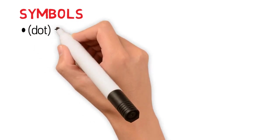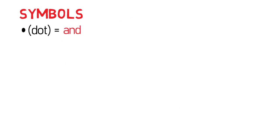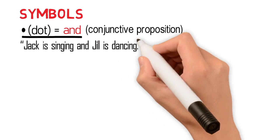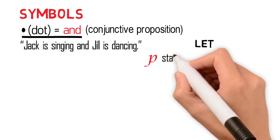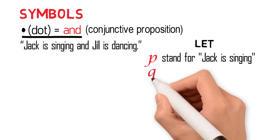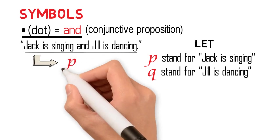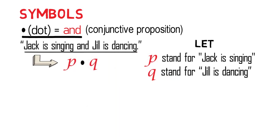One of the symbols used in symbolic logic is the dot, which is read as 'and.' This is used to symbolize the connective of a conjunctive proposition. A conjunctive proposition is connected by the word 'and.' For example, the proposition 'Jack is singing and Jill is dancing' — if we let P stand for 'Jack is singing' and Q for 'Jill is dancing,' then it is symbolized as P · Q.